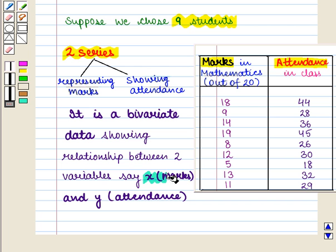Say x representing marks and y representing attendance. We want to find the relationship between the marks of students in mathematics and their attendance in class. But we chose only 9 students.